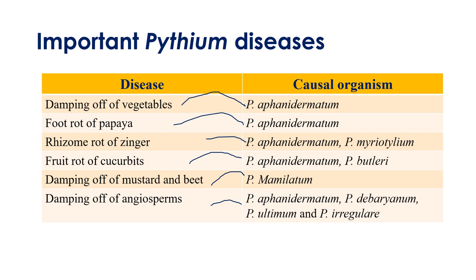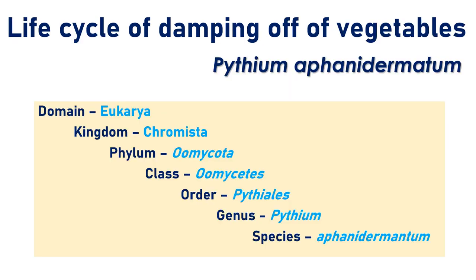Among all Pythium diseases, what we are going to discuss is damping off of vegetables, caused by various Pythium species — especially Pythium aphanidermatum. In PG studies, damping off of vegetables is mainly attributed to Pythium aphanidermatum. We will see the life cycle of damping off of vegetables caused by Pythium aphanidermatum in detail. Its classification: Domain Eukarya, Kingdom Chromista, Phylum Oomycota, Class Oomycetes, Order Pythiales, Genus Pythium, Species aphanidermatum.